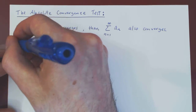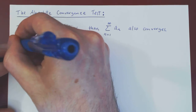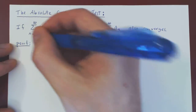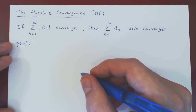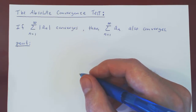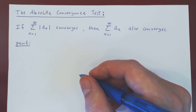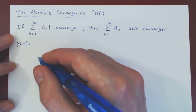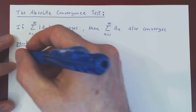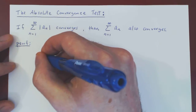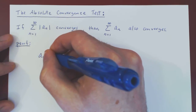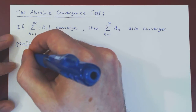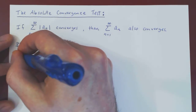So let's prove this result. The proof, as you're about to see, is surprisingly simple but a little sneaky. We'll start with a simple inequality: any real number is always between its absolute value and the negative of its absolute value.